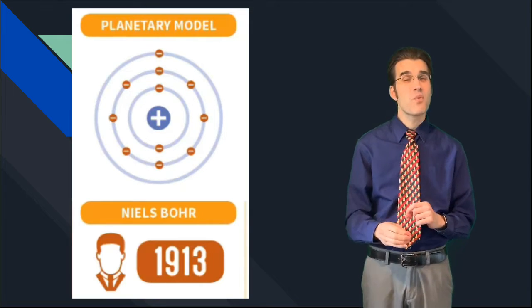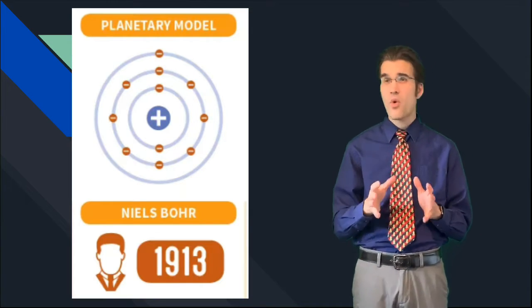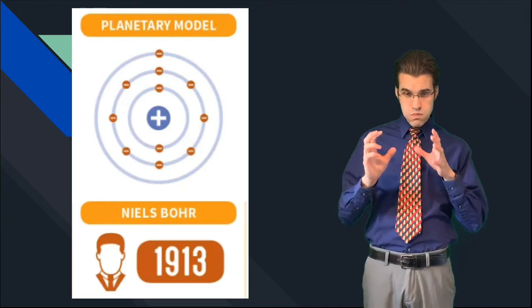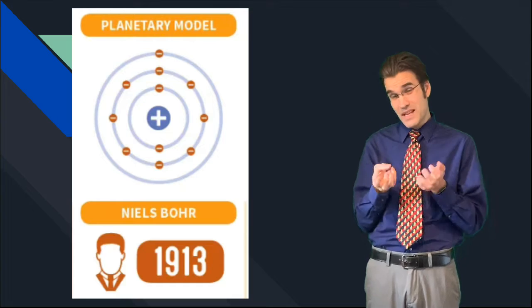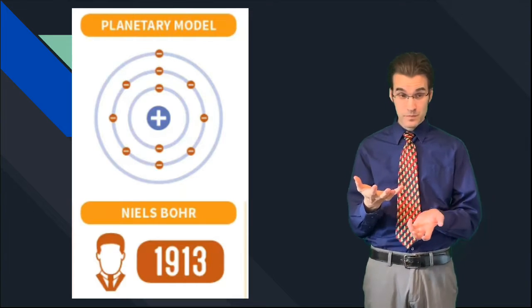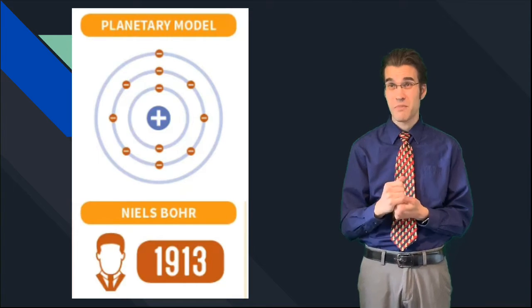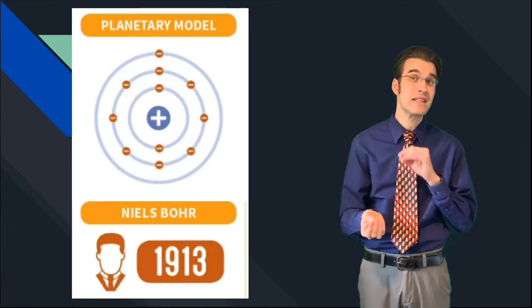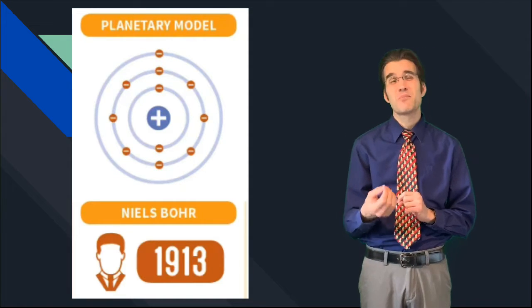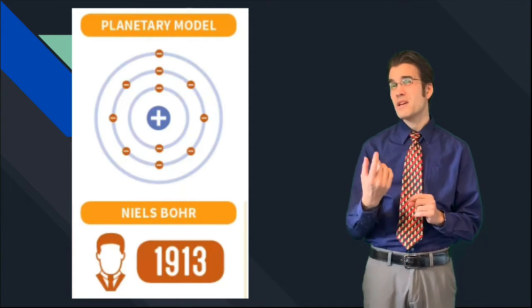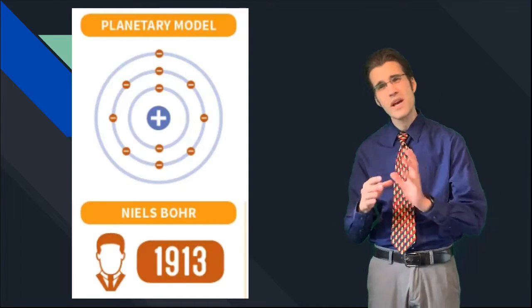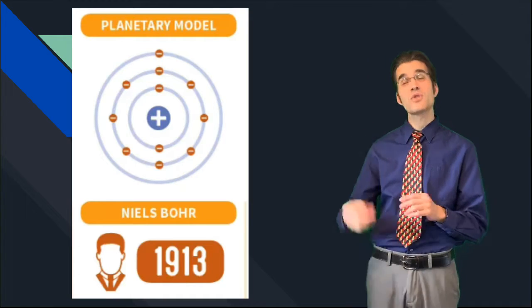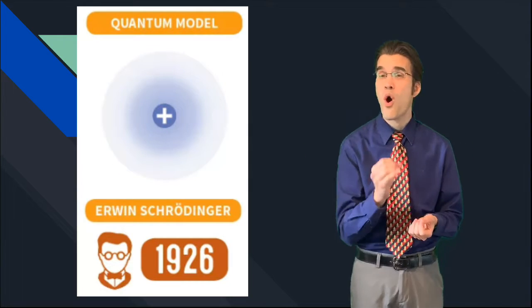A little bit later you have the planetary model by Niels Bohr. Now this one didn't quite work because the way that the electrons are set in orbits like planets, I mean it makes sense if you look at it from a logical perspective, but it didn't explain everything quite right because the ones close, the electrons closer, will be moving faster and the ones farther away, it just didn't work quite right.